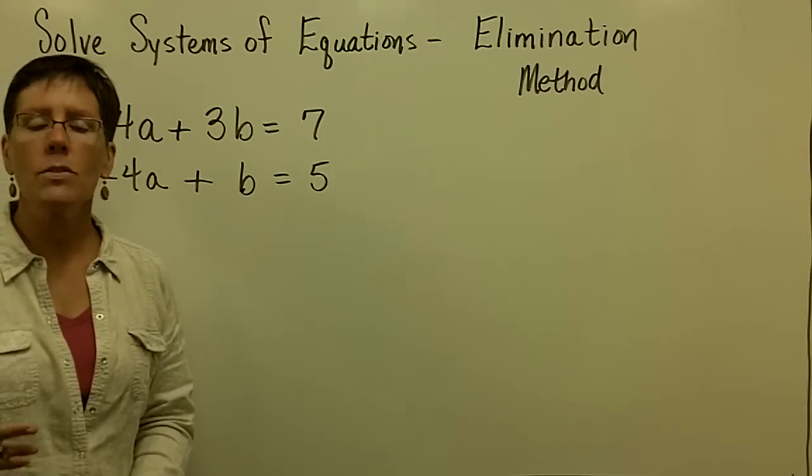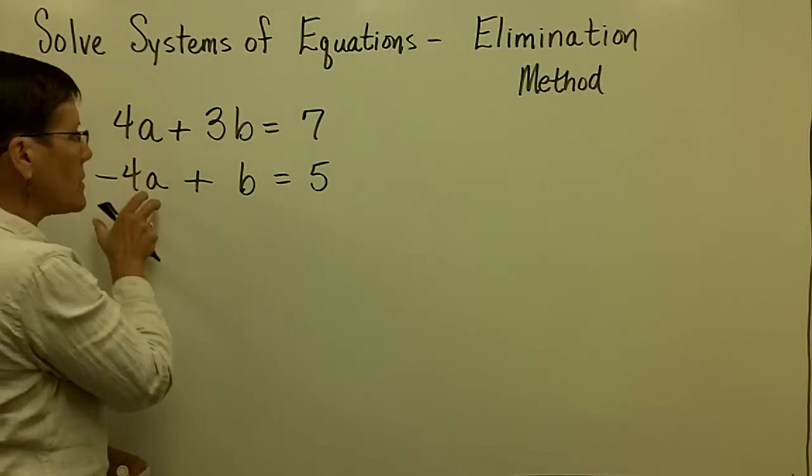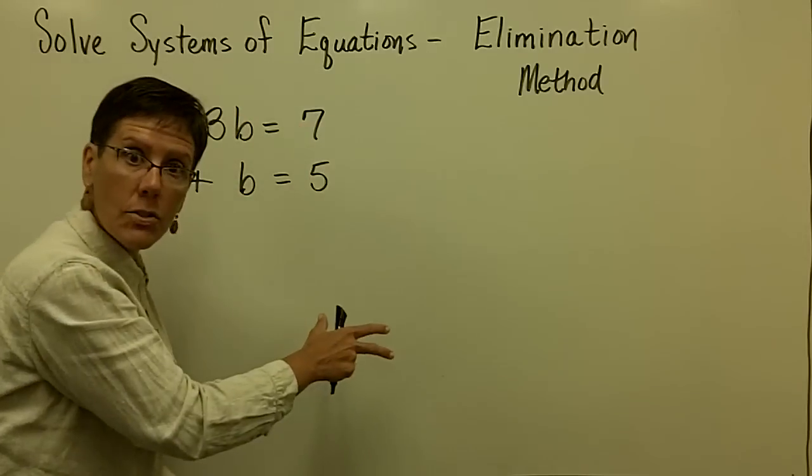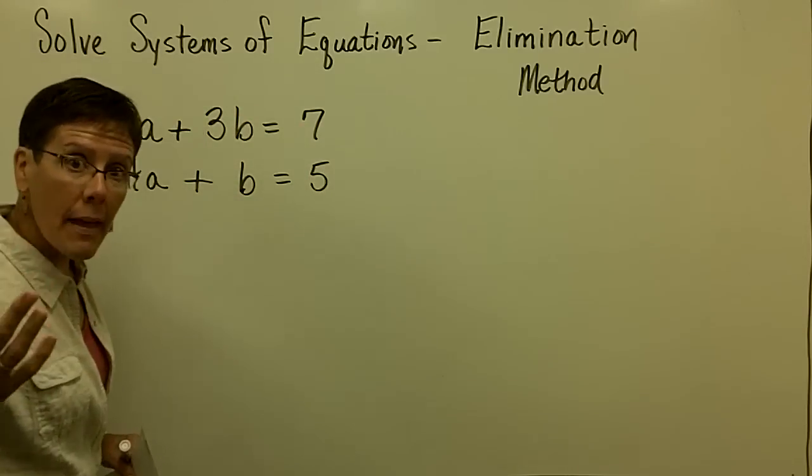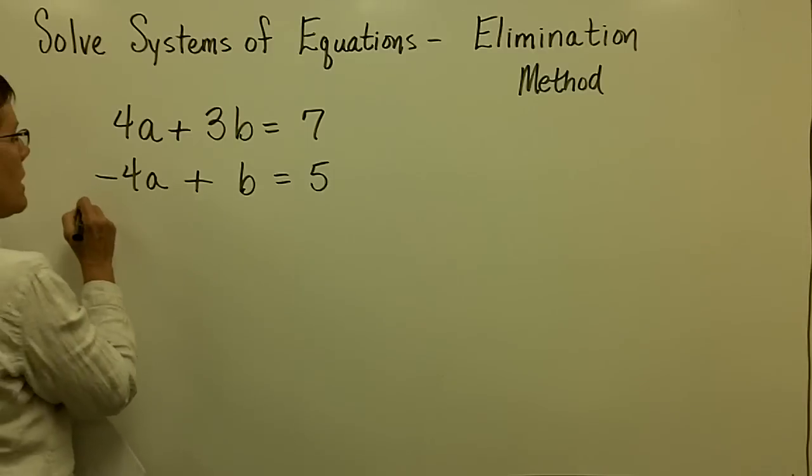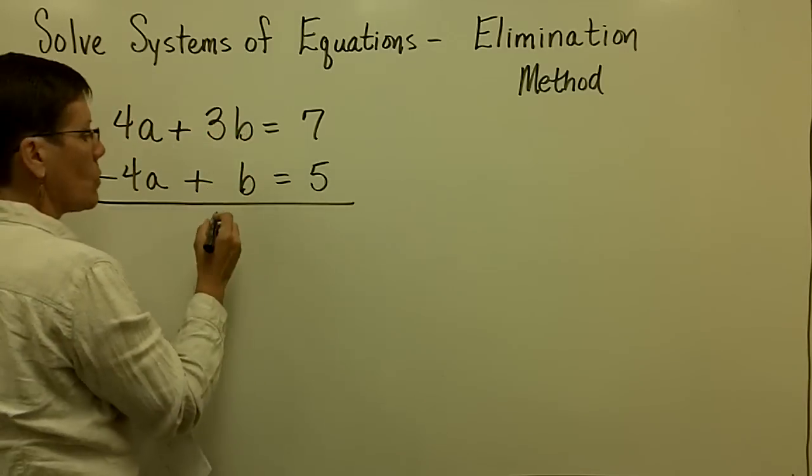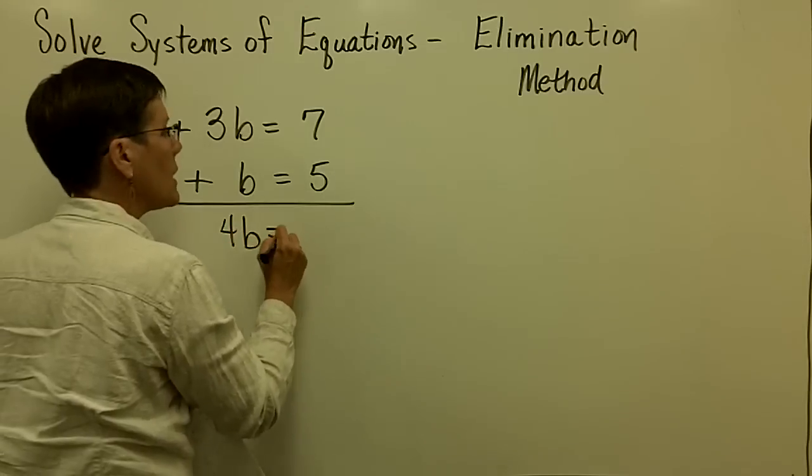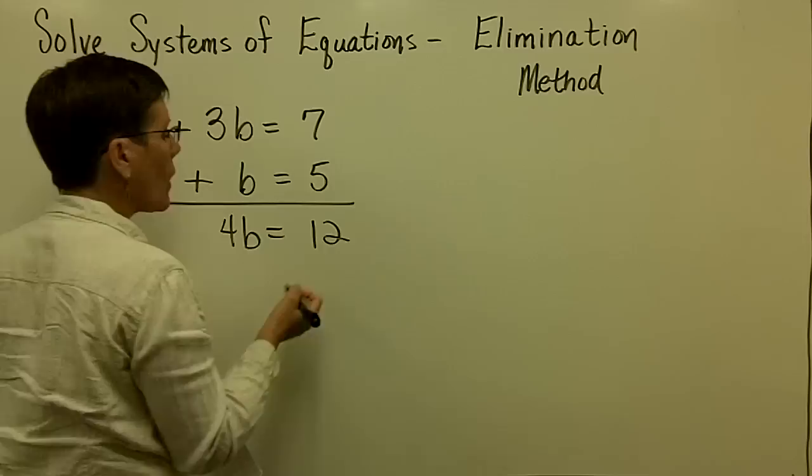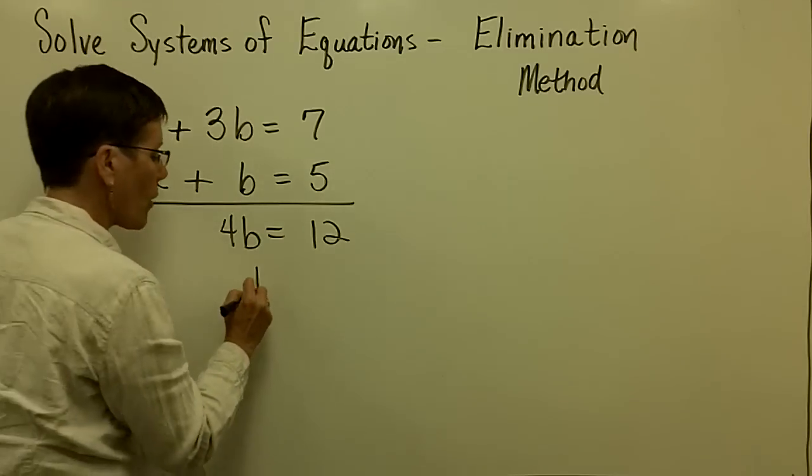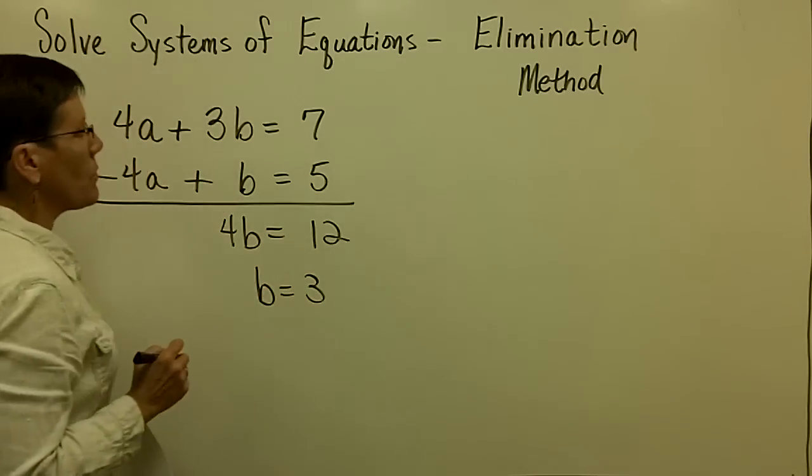So this system of equations is already in standard form. The a's are here, the b's are here, the constants are on the right. You have to make that happen if that's not the case. And then I'm going to add these to get zero. And 3b and 1b is 4b. And 7 and 5 adds to be 12. And you divide both sides by 4 and you find out that b is equal to 3.